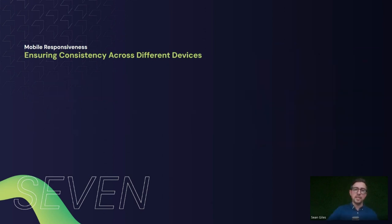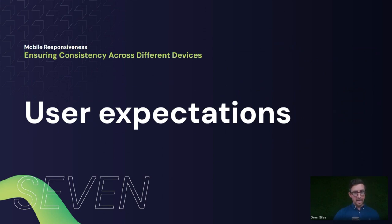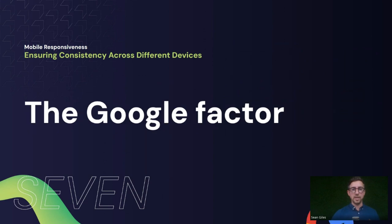Ensuring consistency across different devices: user expectations are a huge factor. If someone accesses through desktop and then goes on a tablet or mobile, you want that experience to be as consistent and as good across different devices as possible. If it's poor on one device but good on another, ultimately the poor experience will prevail and they'll get frustrated. You need to make sure that consistency happens across devices.